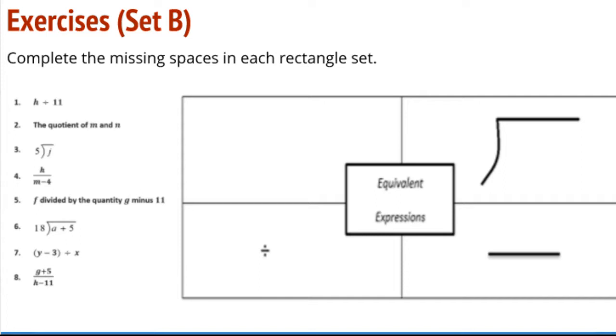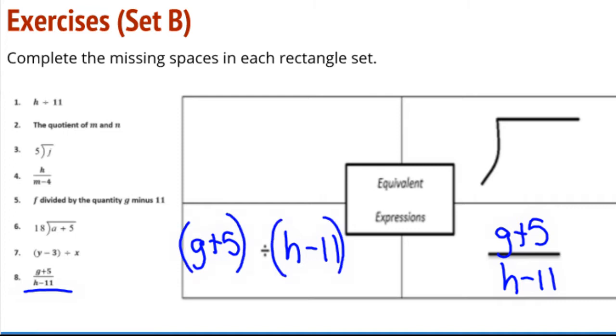And let's take a look at number 8 here. G plus 5 over H minus 11. I'm going to have to do some thinking about this one. So I'm going to have G plus 5, and that's going to be divided by H minus 11. And I need to show that the addition and subtraction happened before the division. So I need to make sure I include the parentheses to perform those operations first.